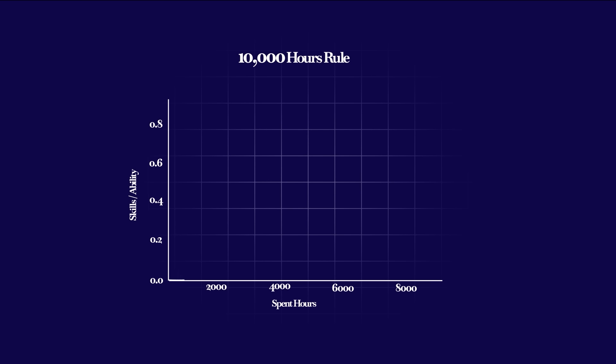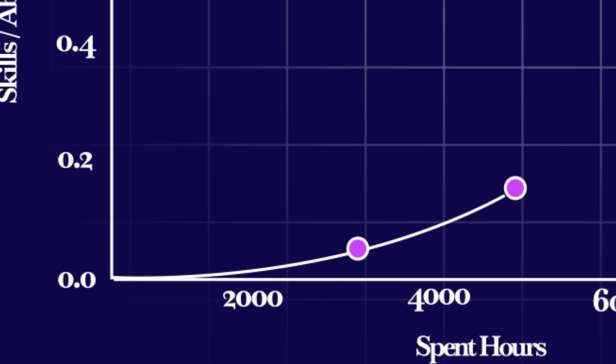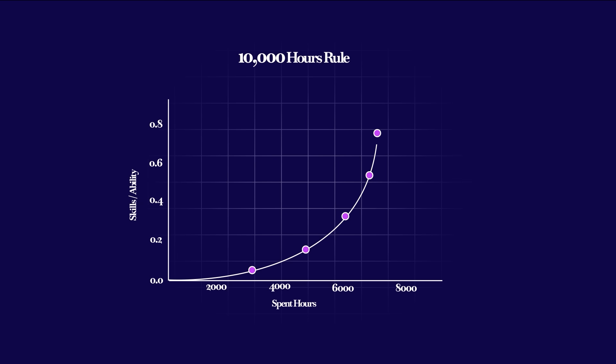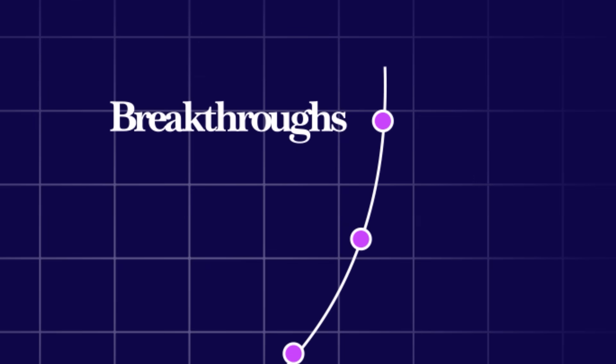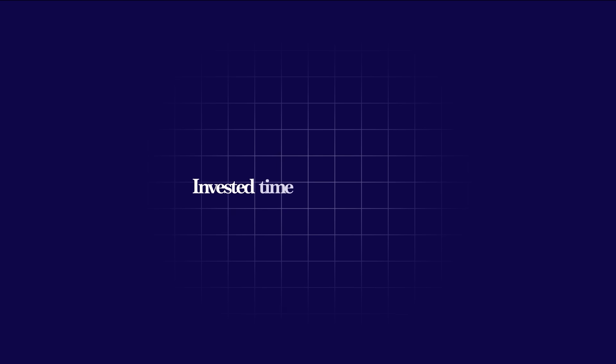At first, progress is slow, but as hours accumulate, ability accelerates, and breakthroughs become more likely. Think of it like compound interest. The longer you invest in creative practice, the faster your growth rate. That's why mastery looks like magic from the outside, but underneath, it's math.